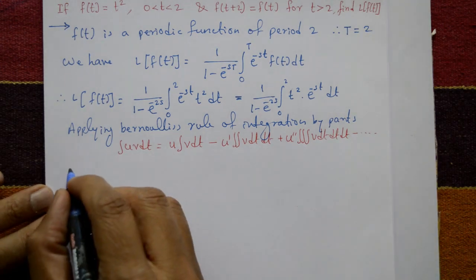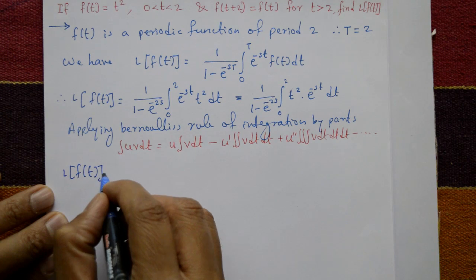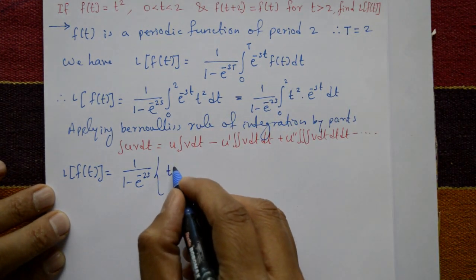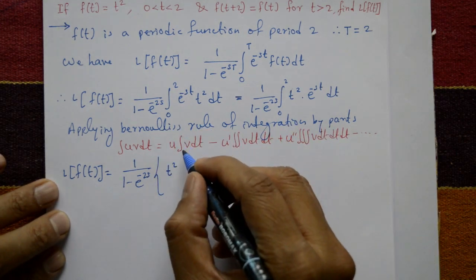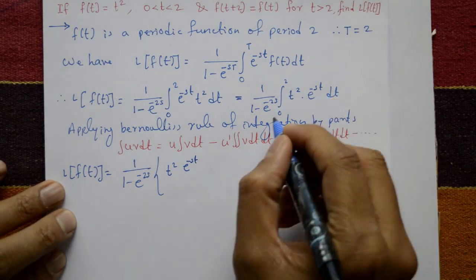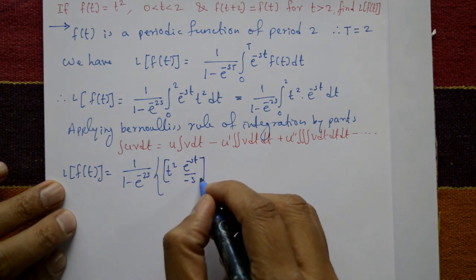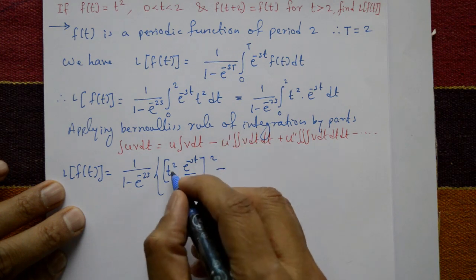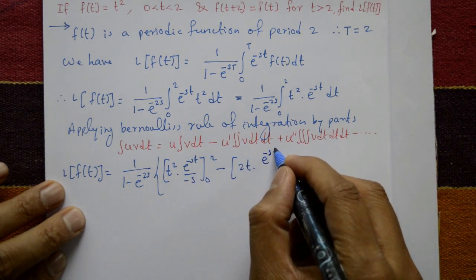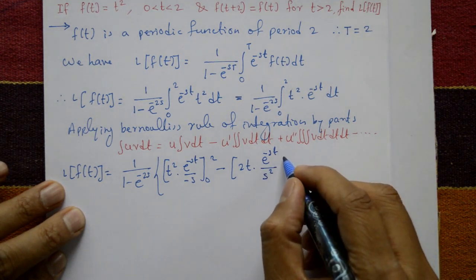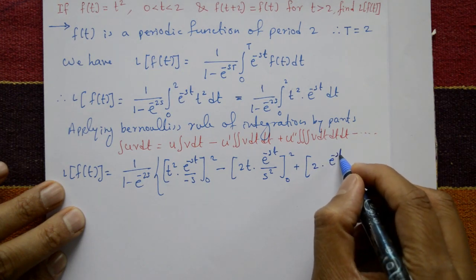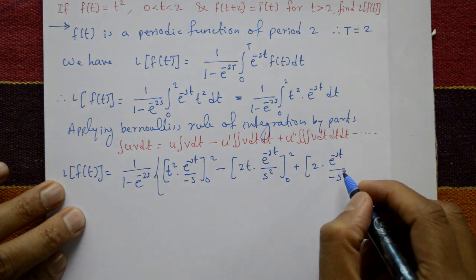Using Bernoulli's rule, L{f(t)} equals 1 upon 1 minus e raised to minus 2s. The u part is t squared as it is. Integrate the v part, e raised to minus st, to get e raised to minus st divided by minus s, with limit 0 to 2. Minus u-dash: differentiate t squared to get 2t, times the integral of e raised to minus st divided by minus s into minus s, giving s squared, with limits 0 to 2. Plus u-double-dash: differentiate again to get 2, times e raised to minus st integrated three times, giving minus s cubed, with limit 0 to 2.